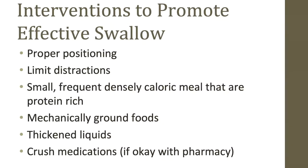Reduced appetite and weight loss can be a problem in advanced stage FTD, so providing small frequent meals that are high in calories, especially in protein, can help meet nutritional requirements. Consider changing the consistency of food, such as mechanically ground foods or pureed foods — things like applesauce and thickened liquids to a smoothie consistency — to help with someone having difficulty swallowing. These foods are also advantageous for individuals who are hyper oral because it can slow the swallow down. Lastly, pills can be really difficult to swallow, so ask your pharmacist if medications could be crushed or if there's a liquid form available.